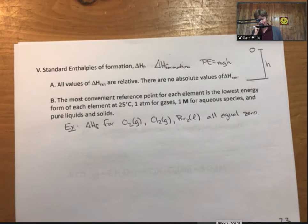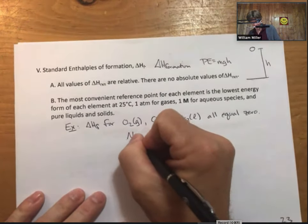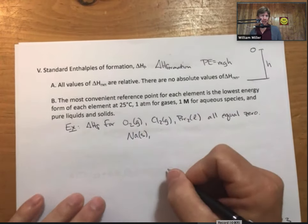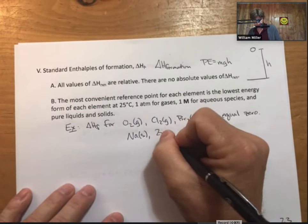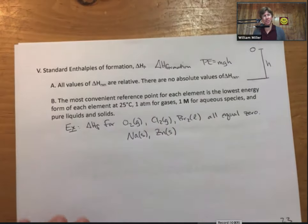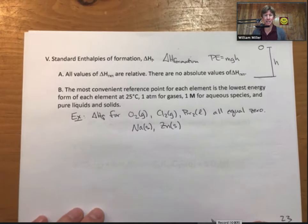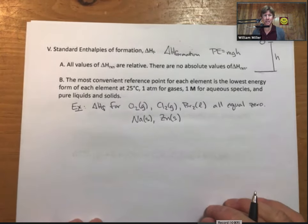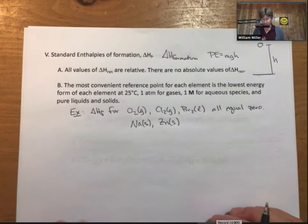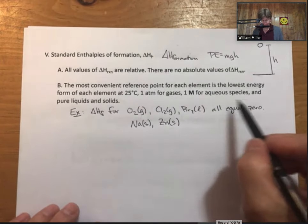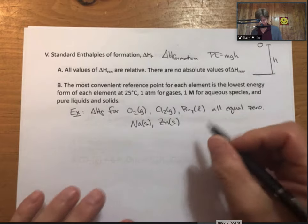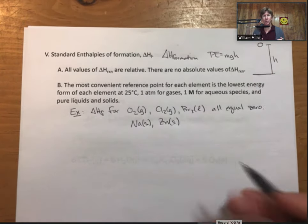We could say the same thing for Na solid, zinc solid, most elements are solids on the periodic table. So most of them go like that. Alright. Then for solids, gases, and then when we have compounds, we will measure or we will tabulate in this case.